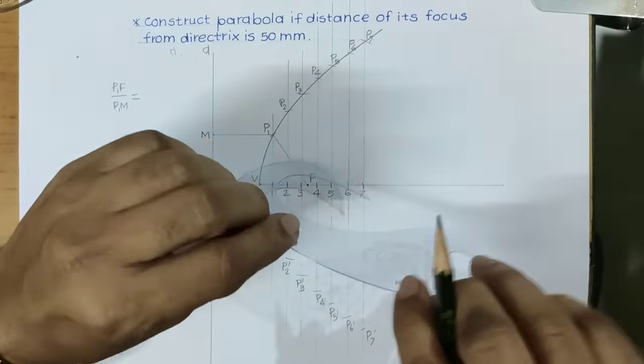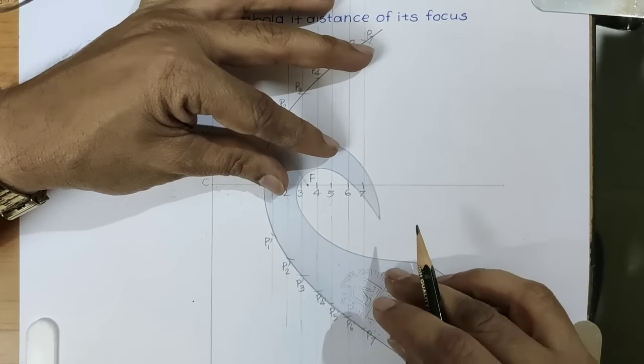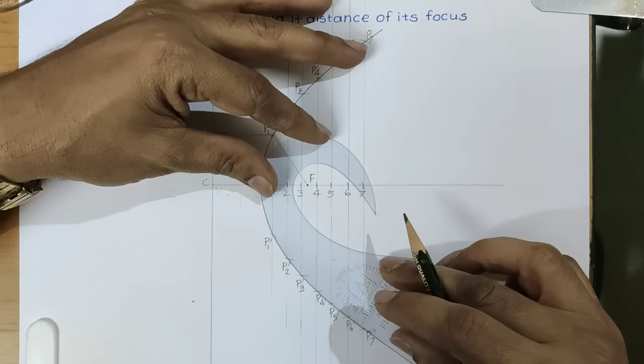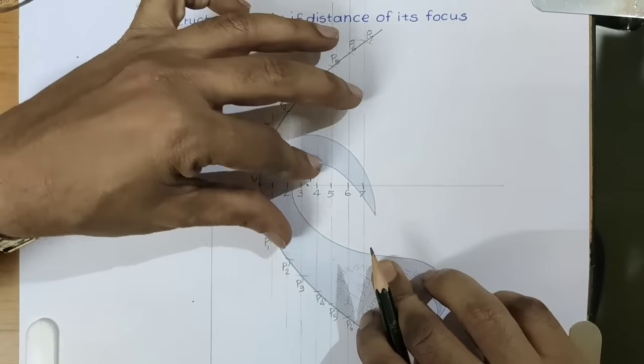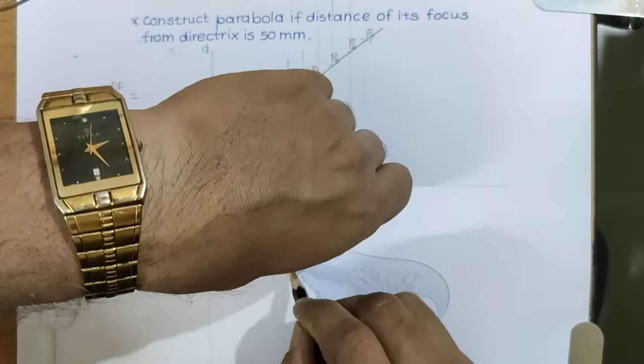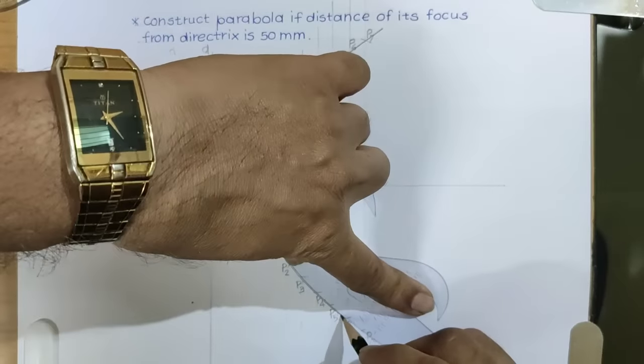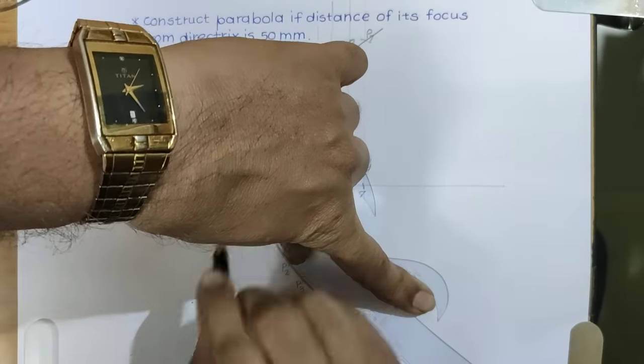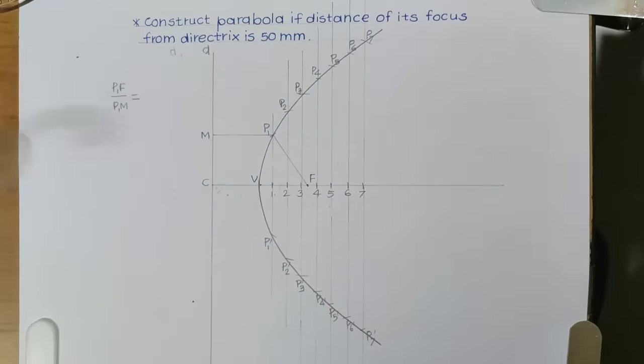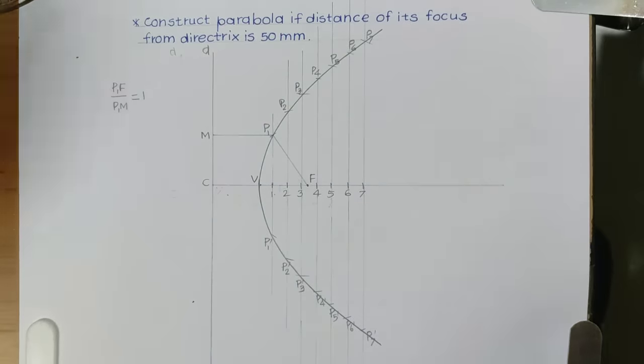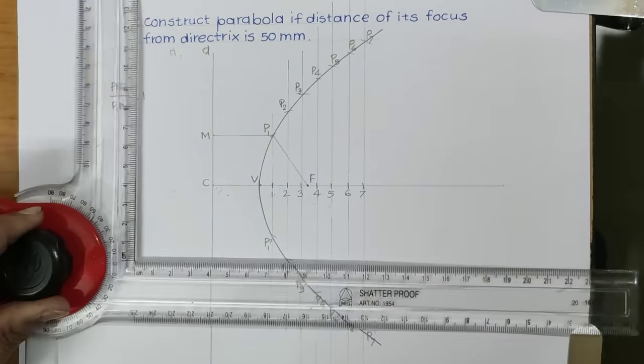Then, mirror image of this. This gives parabola by focus directrix method. Here, this ratio is 1. You can give dimensions also.